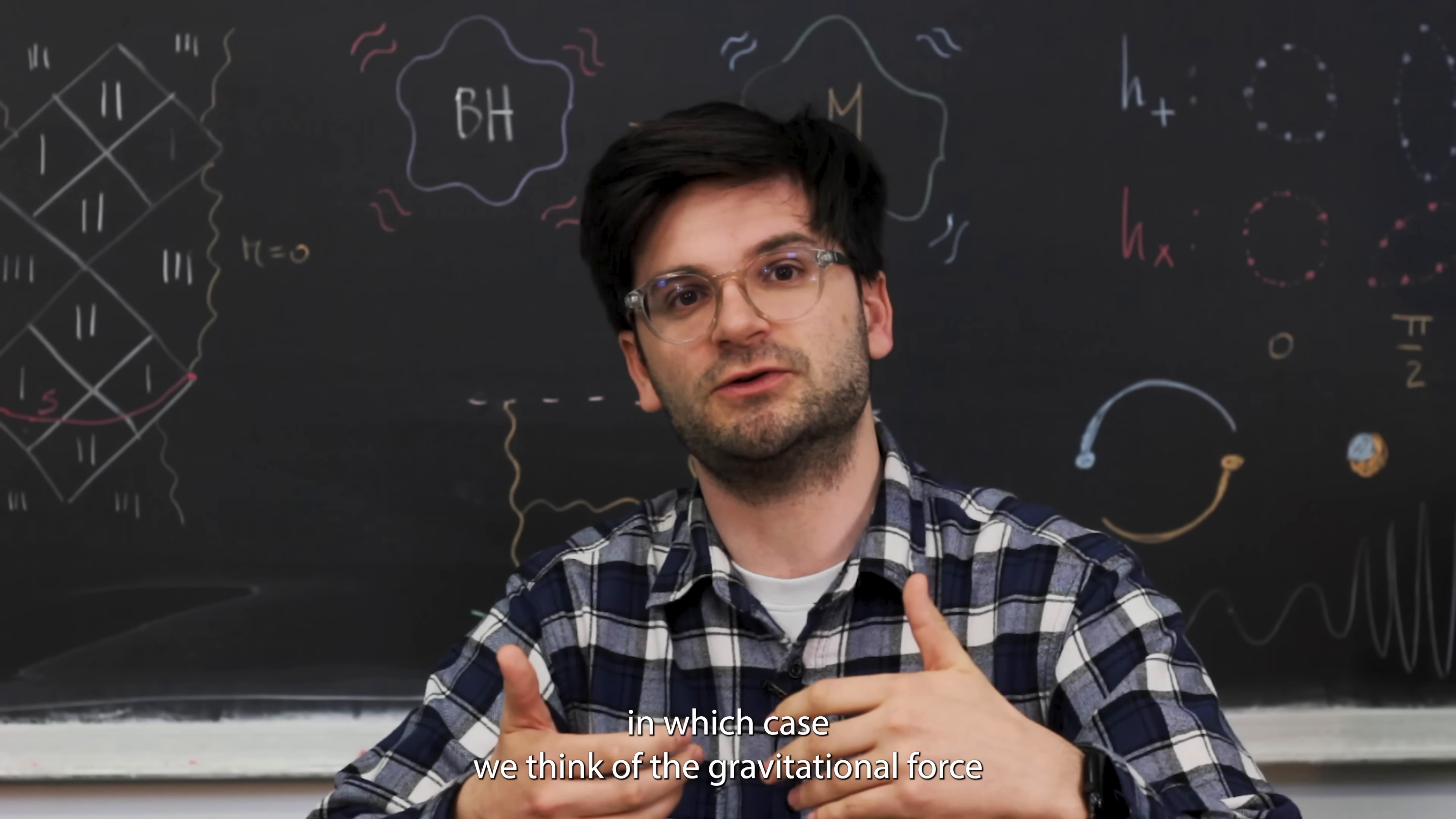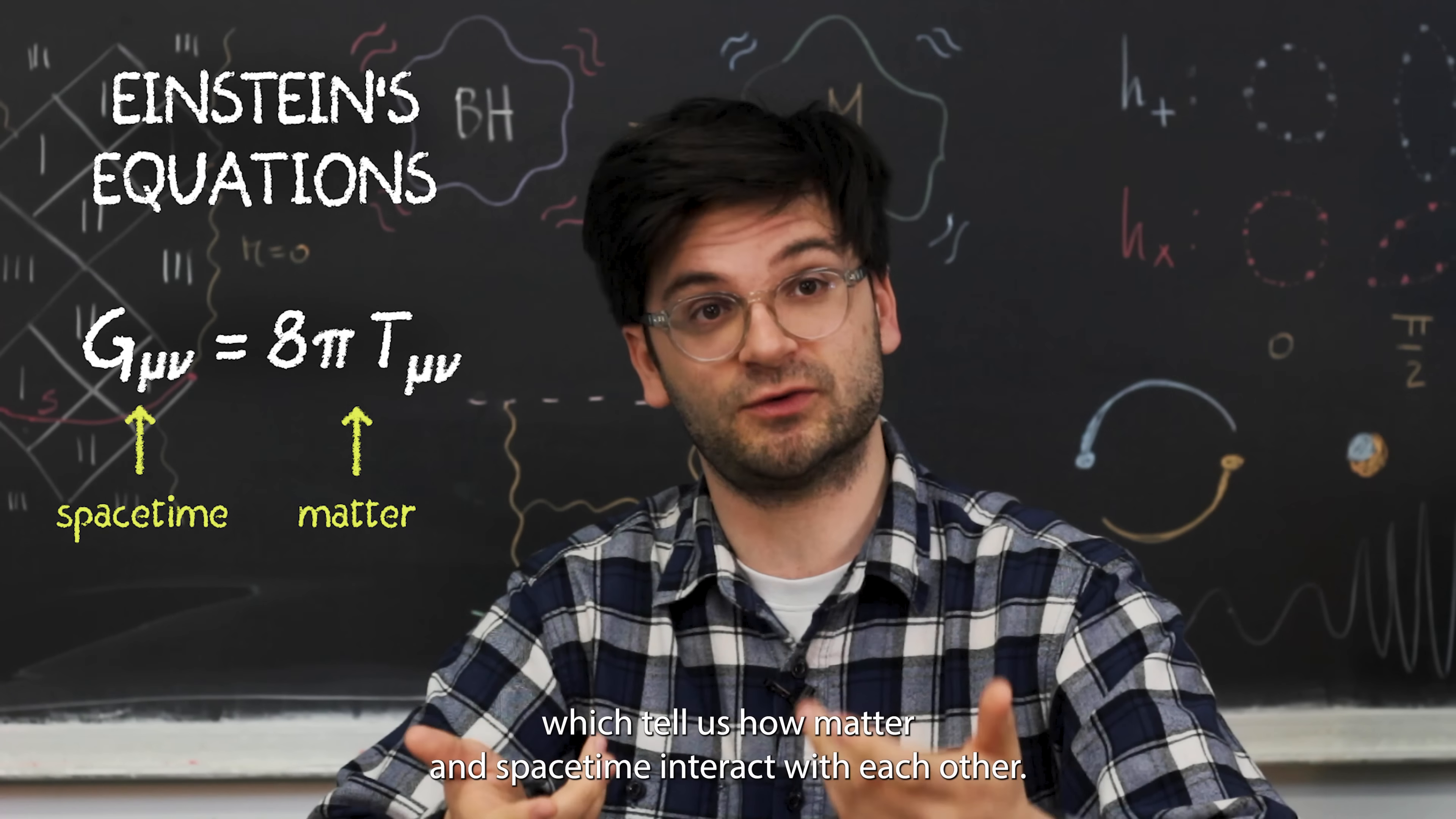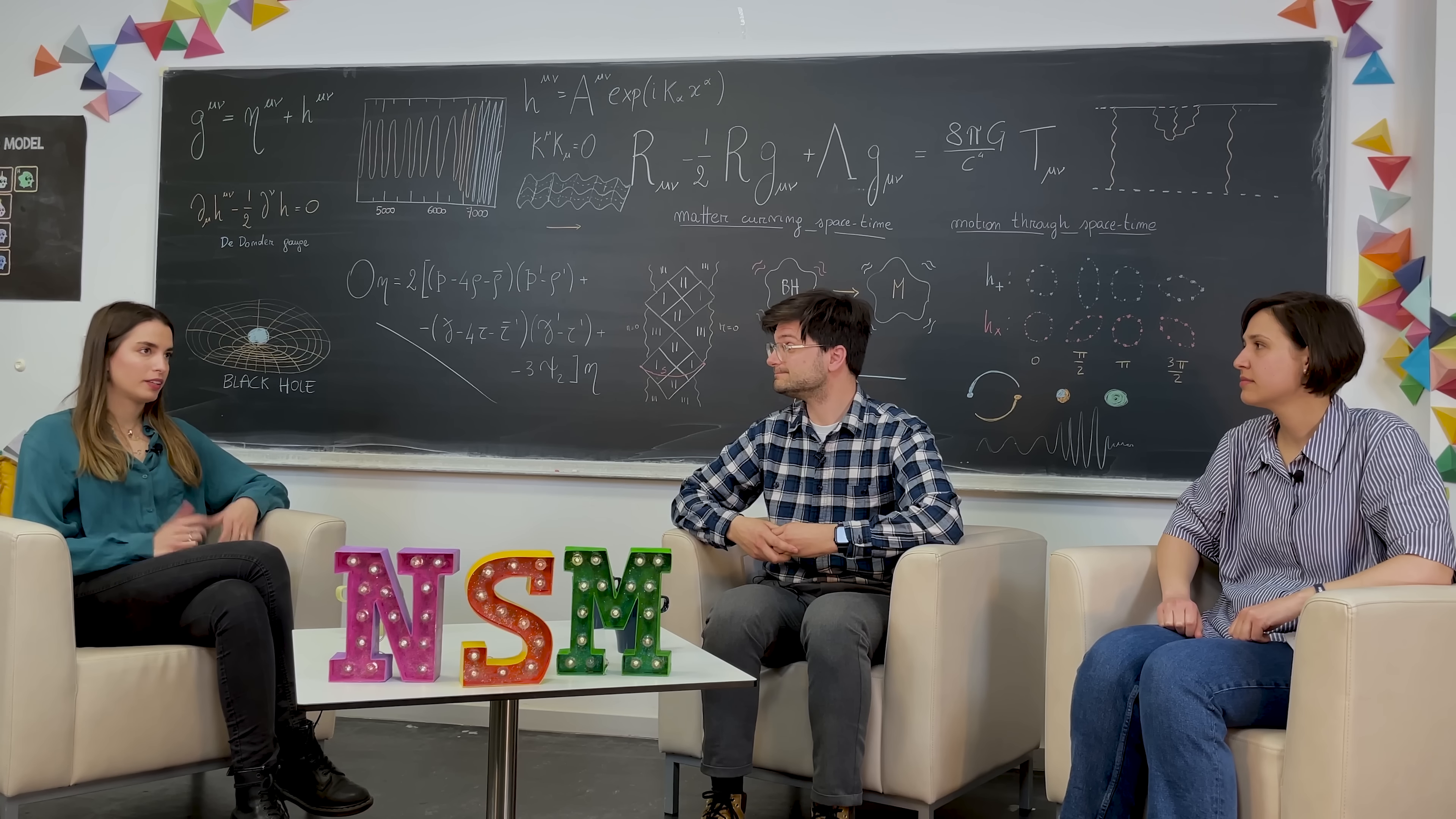Einstein's theory upgrades this by taking a different perspective, in which case we think of the gravitational force not so much as a gravitational force, but rather as distortions of the underlying spacetime. From this perspective, we have Einstein's equations, which tell us how matter and spacetime interact with each other. Now in order to describe gravitational waves, what we need to do is solve Einstein's equations. But in practice this often turns out to be quite difficult.